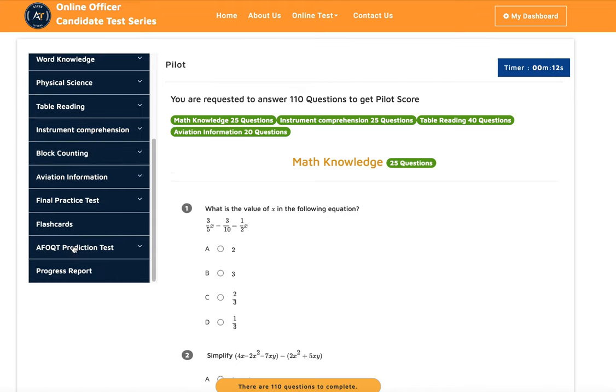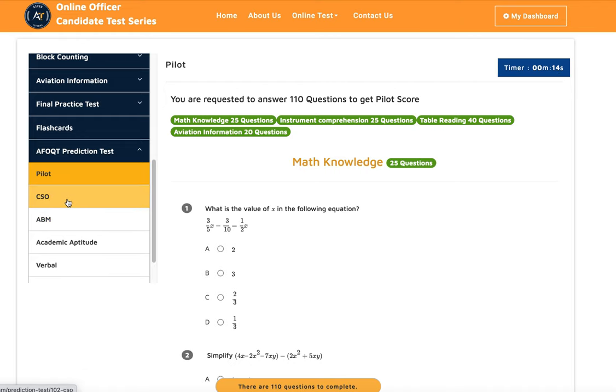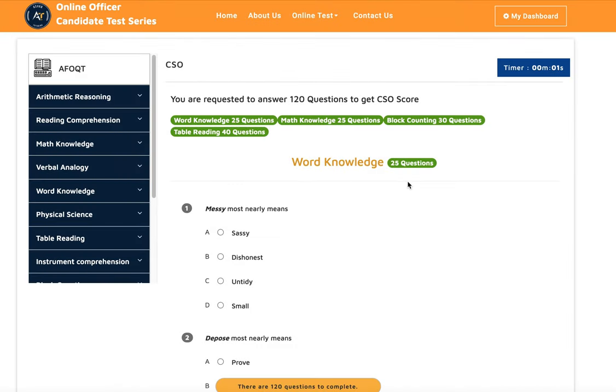The next one is CSO, Combat System Officer composite. This is actually based on your word knowledge, math knowledge, block counting, and table reading skills level.